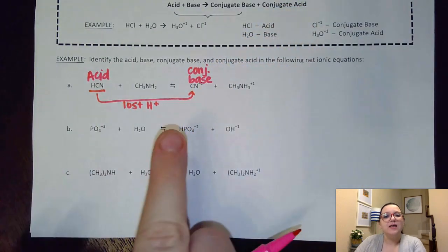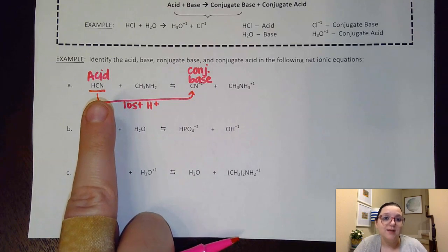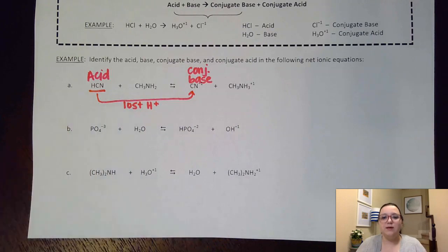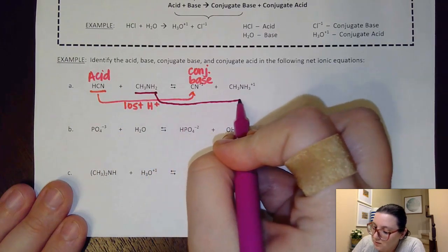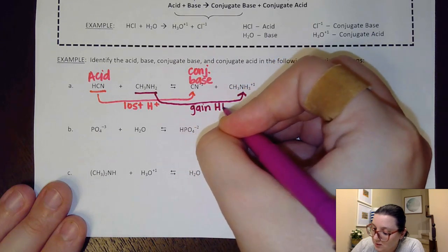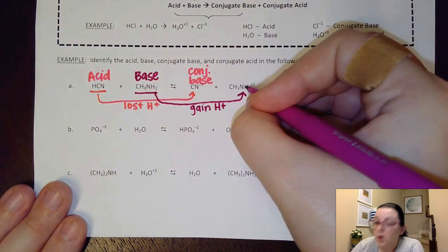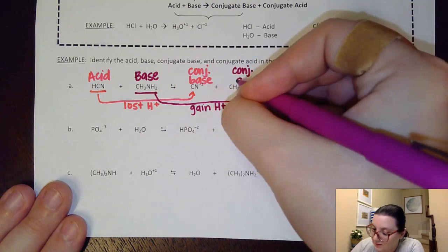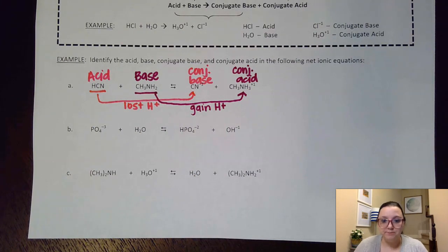What that means for my CN⁻¹ is that it is the conjugate base. Again, it gets called that because if I were to reverse the process, it would end up gaining an H⁺ to go back and form HCN — it behaves as a base in the opposite direction. Now, for the other pair: CH3NH2's partner on the other side is CH3NH3⁺¹. The process that took place is that we gained an H⁺, which means this original substance was my base, and its partner on the other side is the conjugate acid — because in the opposite direction it would lose an H⁺ just like an acid would.